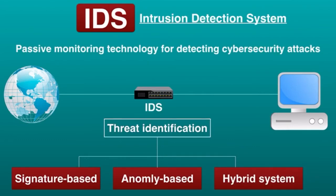A hybrid system uses both signature-based and anomaly-based methods to identify potential threats. Anomaly-based systems are typically more useful than signature-based because they are better at detecting new and unrecognized attacks.